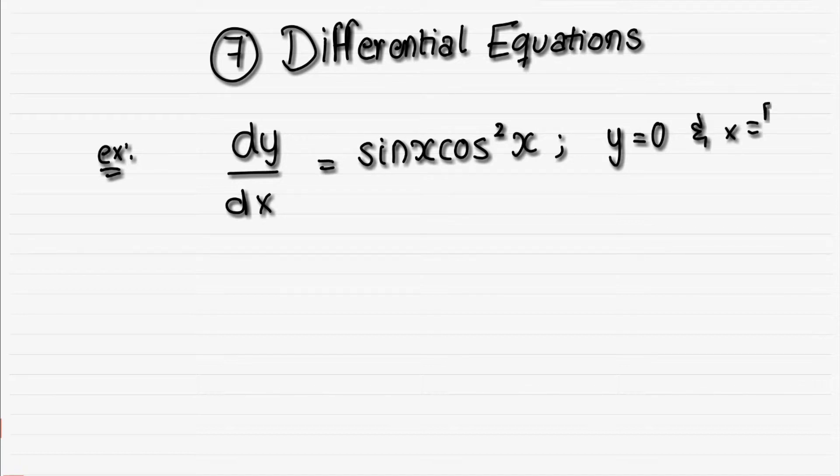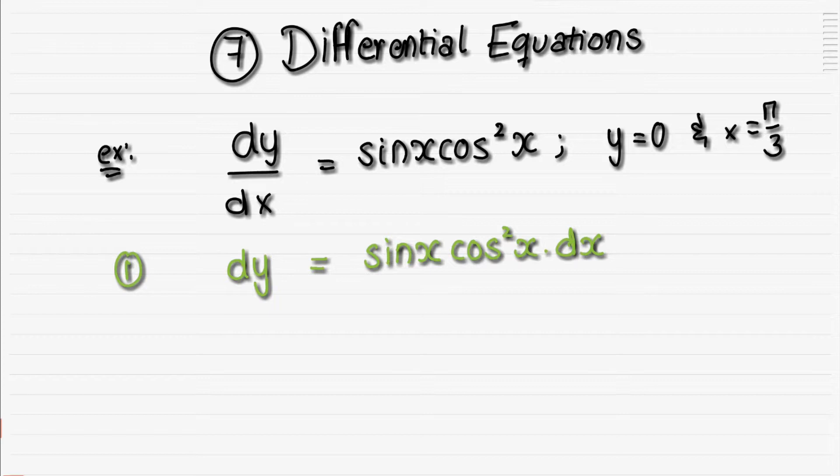Now, the first step we're going to do here is that we are going to isolate the different variables. So here we're going to have the y's on one side, and on the other side we'll have all the x's, which here we happen to not have a y, but it's not always the case. You'll see this later.